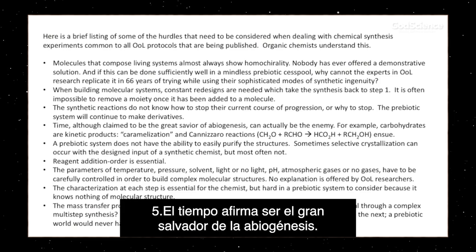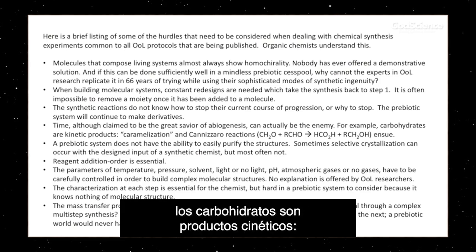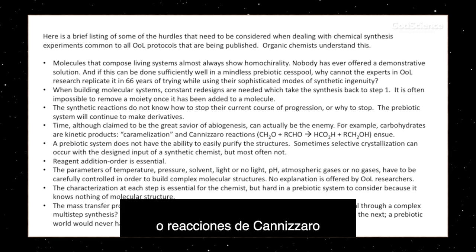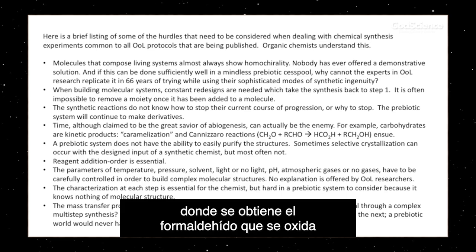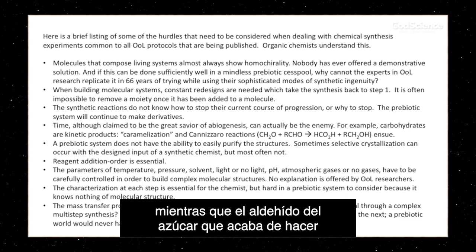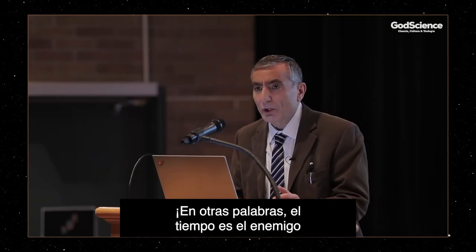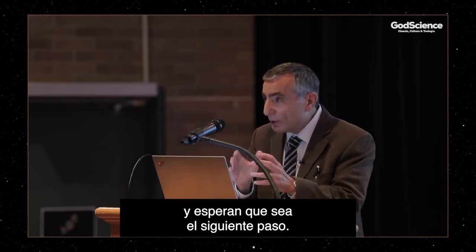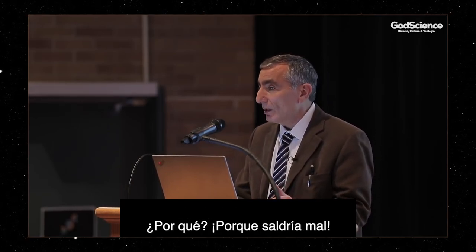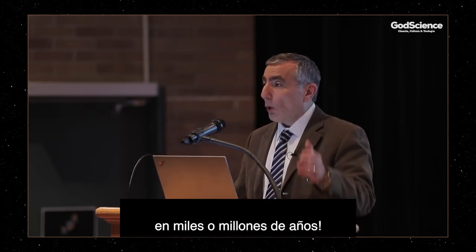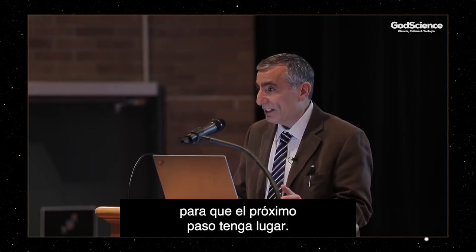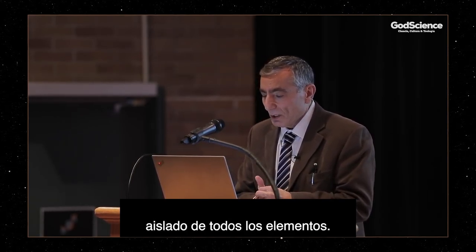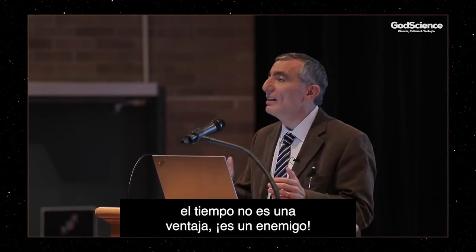Time, although claimed to be the great savior of abiogenesis, can actually be the enemy. For example, carbohydrates are kinetic products — there's caramelization, meaning they polymerize. Or the Cannizzaro reaction takes place where formaldehyde will oxidize to carbonic acid while the aldehyde of the sugar you've just made gets reduced to the alcohol. Time is the enemy of organic chemists. What do they do? They make something, right away work it up, and put it in the freezer. Why? Because it goes bad. And remember, these things are going to have to wait around for thousands or millions of years for the next step — not in a freezer, isolated from all the elements. When you're making a kinetic product, time is not an advantage; it's an enemy.